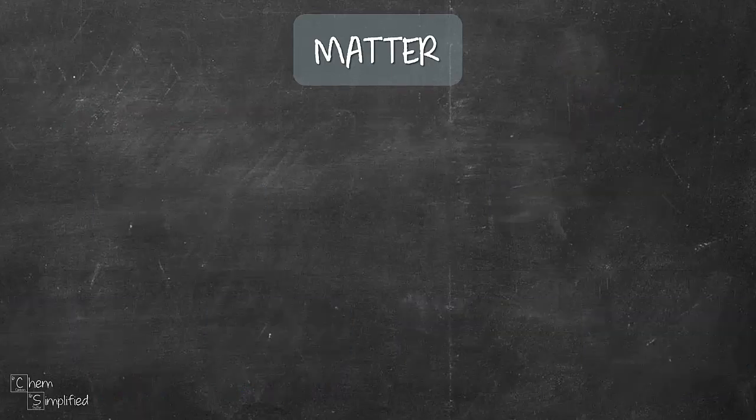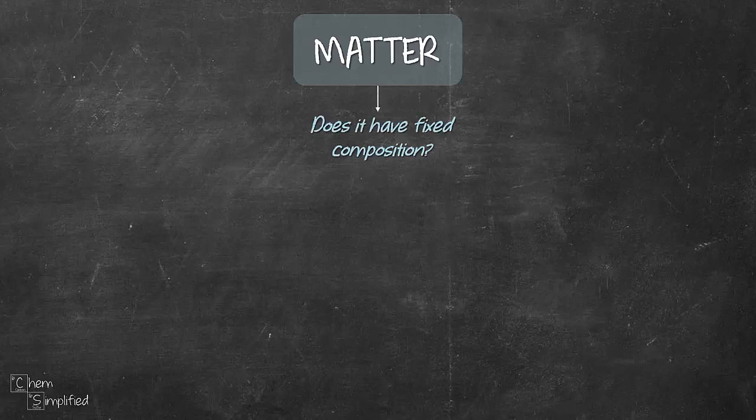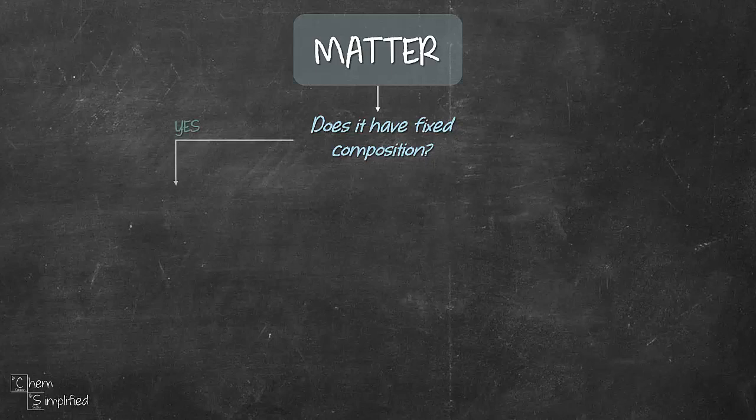To simplify the classification of matter, we can ask simple questions that will help us classify the matter correctly. So when given a matter to classify, the first question we should ask is: does it have fixed composition? Meaning, do we know exactly what it is made out of? Are we able to provide the chemical formula for that matter?